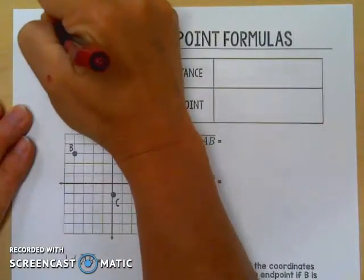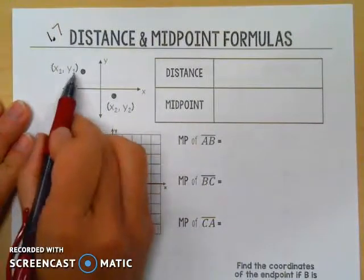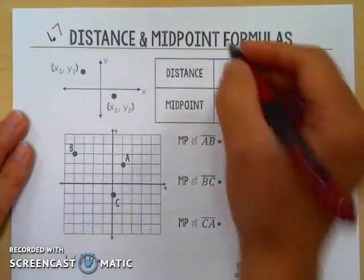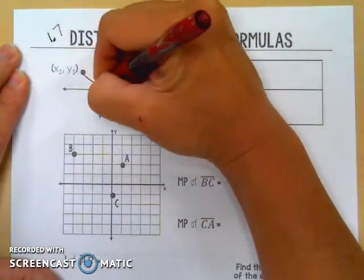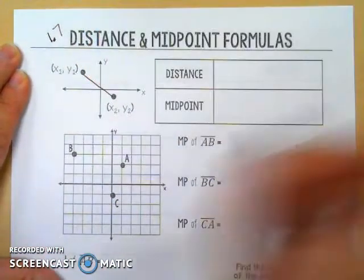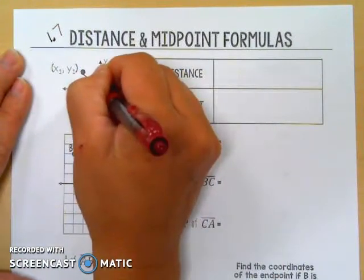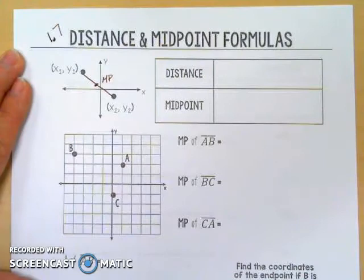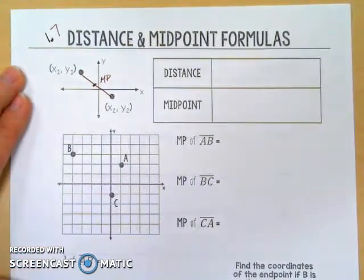This is section 1.7, distance and midpoint formulas. We're going to look at two points on a coordinate grid and find the distance between those two points that make a segment. Where's the middle of those two? What's the midpoint? We'll call it MP for midpoint — where is the midpoint of that segment on the coordinate grid?